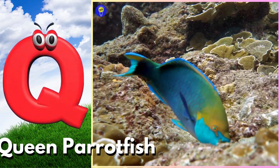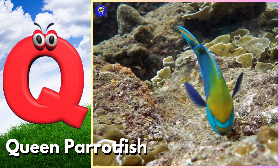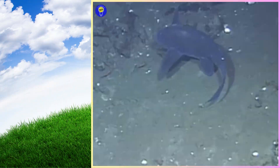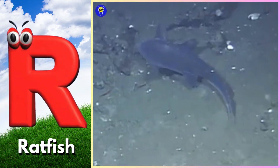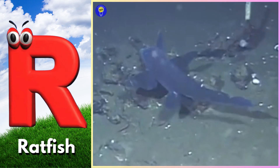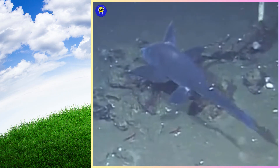Q is for queen parrotfish. Kuh, quuh, queen parrotfish. R is for ratfish. Pruh, pruh, ratfish.